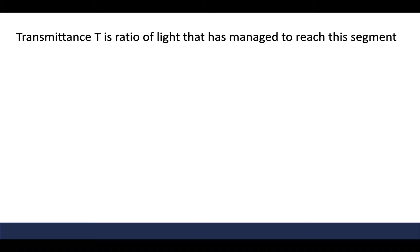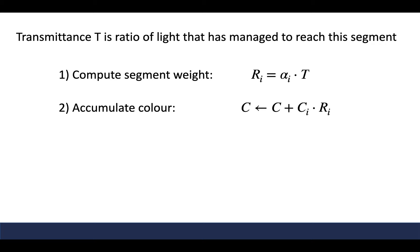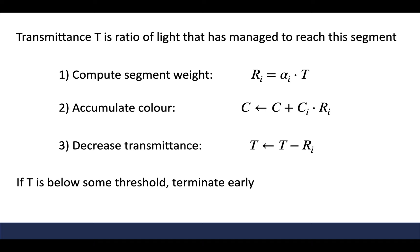We define our transmittance T as the ratio of light that has managed to reach this segment. The ratio of light consumed by a segment is the product of the segment alpha and the current transmittance. For example, when alpha is 1, the ratio of light consumed is just the ratio of light remaining, T. This ratio also serves as the weight of the color in the integral we are approximating. Finally, we update our transmittance based on how much light was consumed. If T falls below some threshold, we terminate the algorithm early to save time.